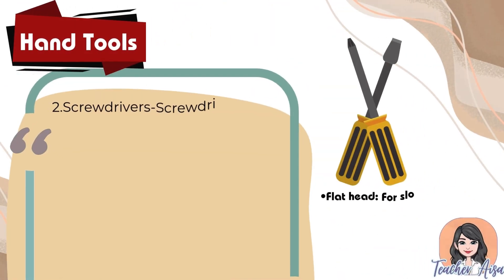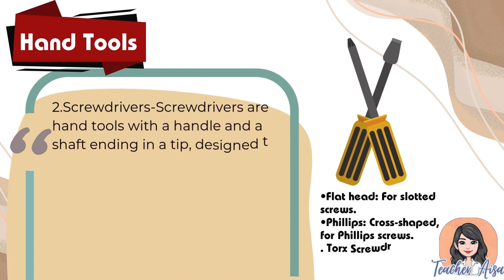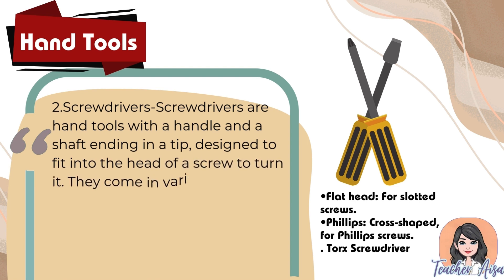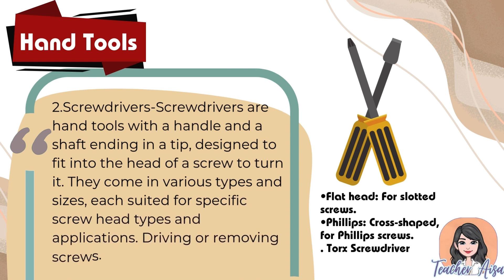Next is screwdrivers. Screwdrivers are hand tools with a handle and a shaft ending in a tip designed to fit into the head of a screw to turn it. They come in various types and sizes, each suited for specific screw head types and applications — driving or removing screws. Examples are: flat head for slotted screws, Phillips (cross-shaped) for Phillips screws, and Torx screwdriver.